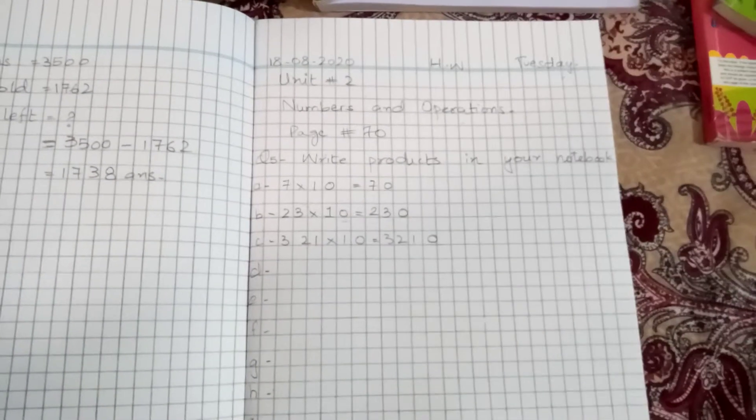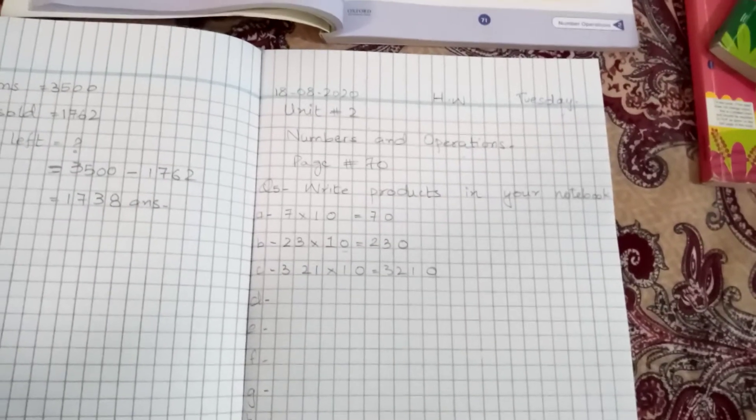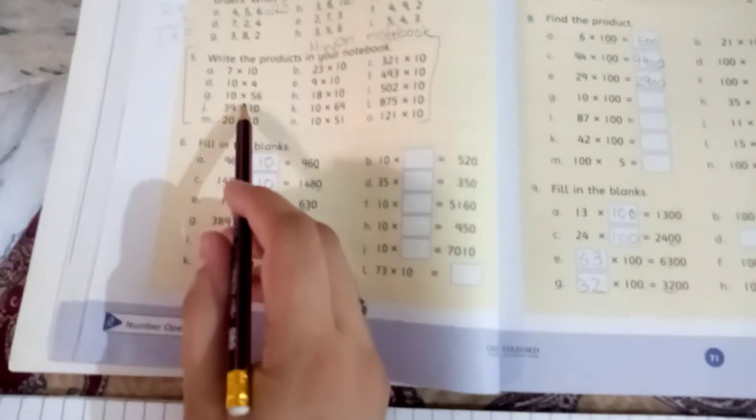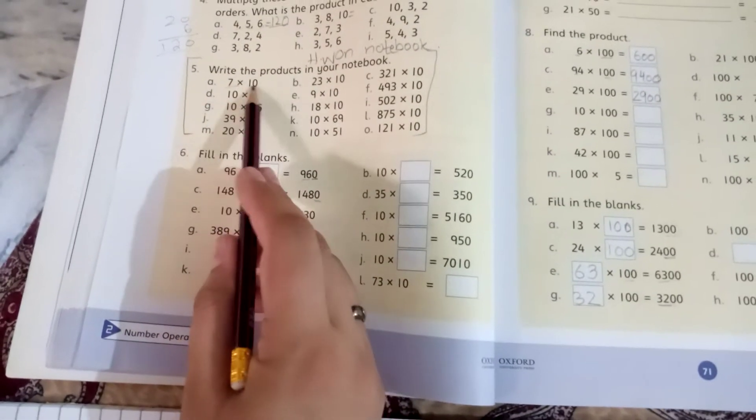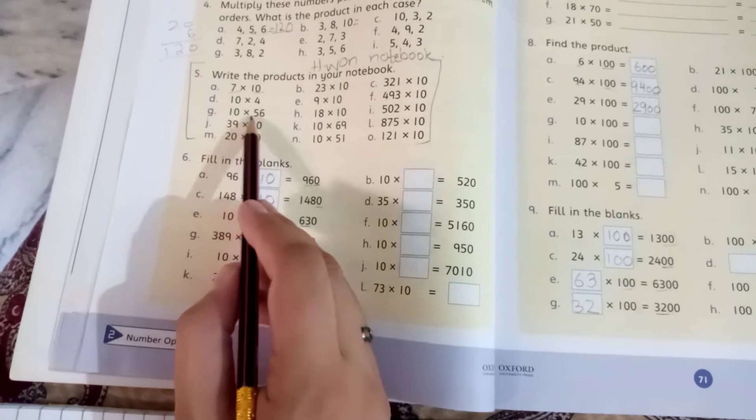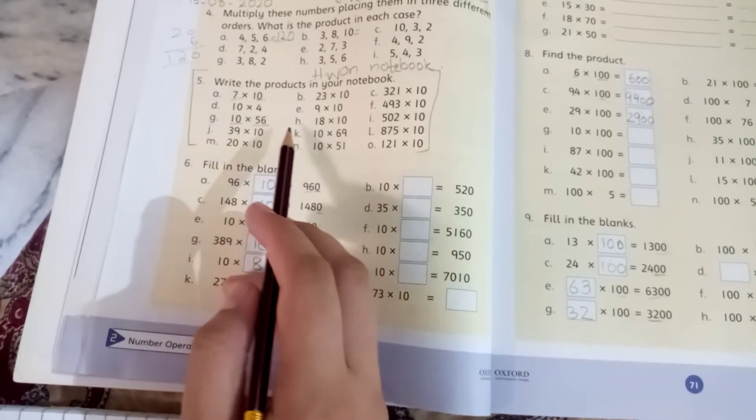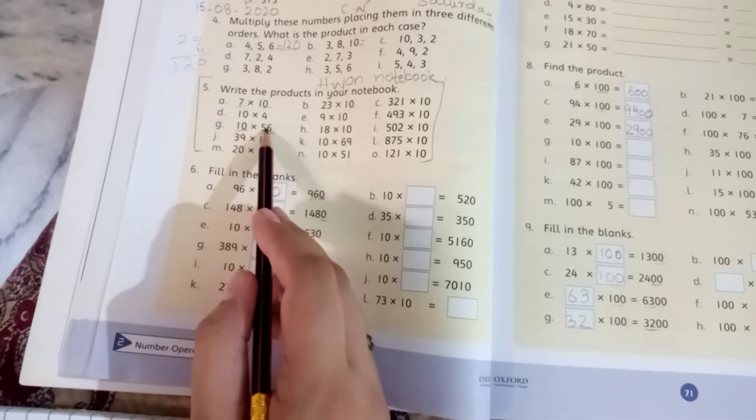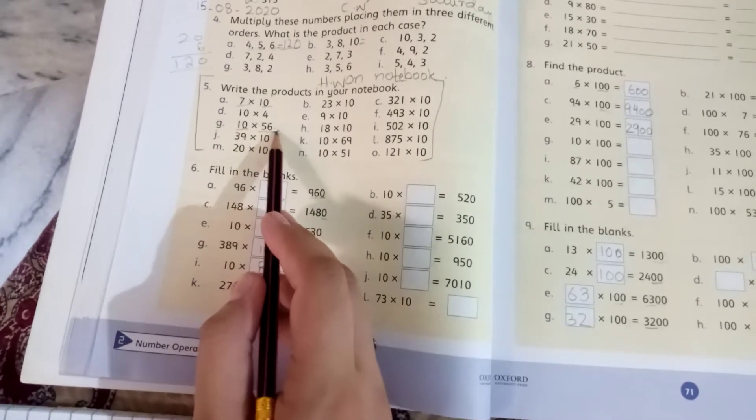In some parts, the number is the first part. For example, here is the first number and the first part. Then, 56 multiply by 10 - if you add a 0, it will be 560. Okay?